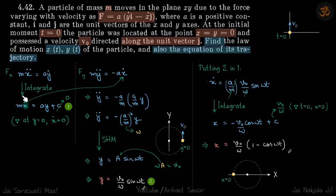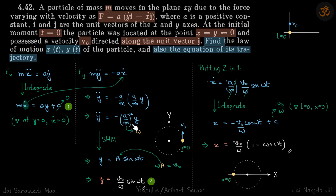So we integrate the x-equation: C is zero because when y=0, ẋ=0. Substituting x·dot = (a/m)·y into the y-equation gives ÿ = -(a/m)² · y, which is the equation of SHM with ω = a/m.